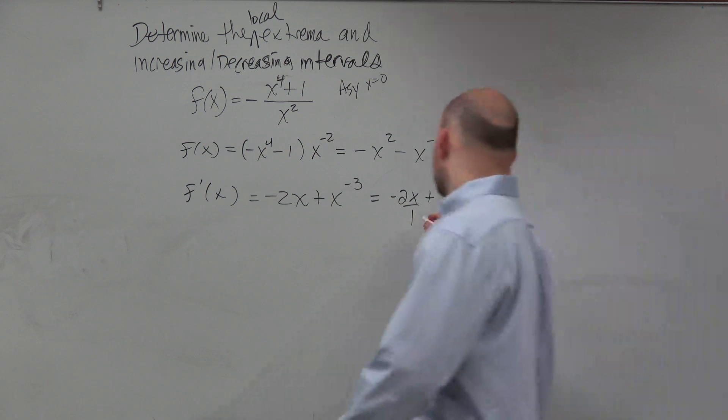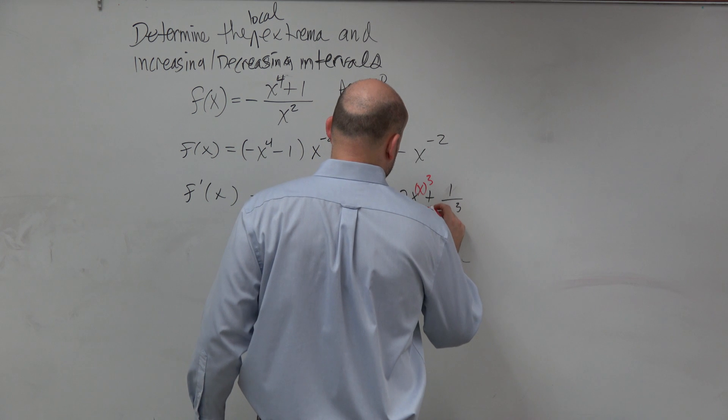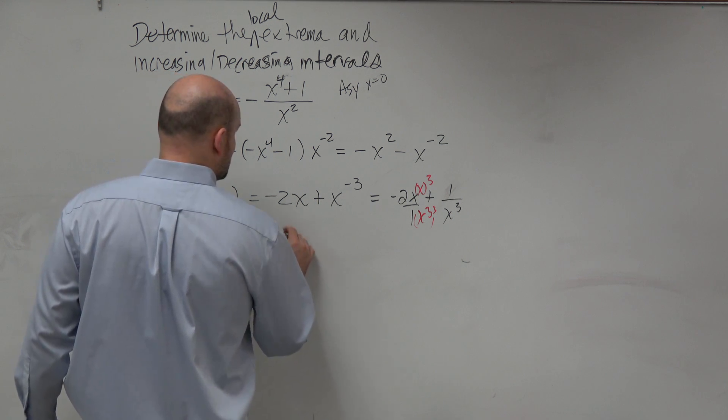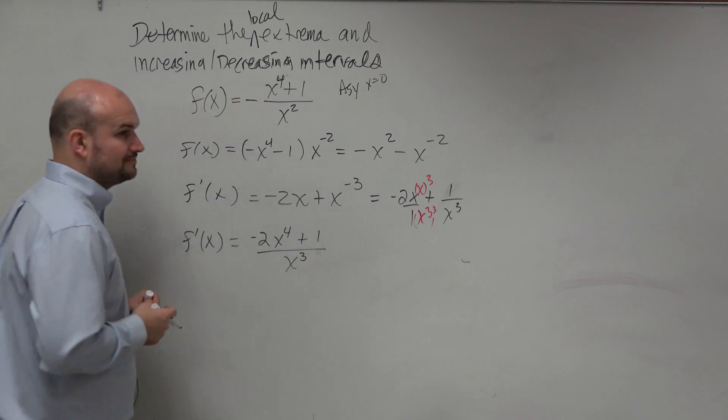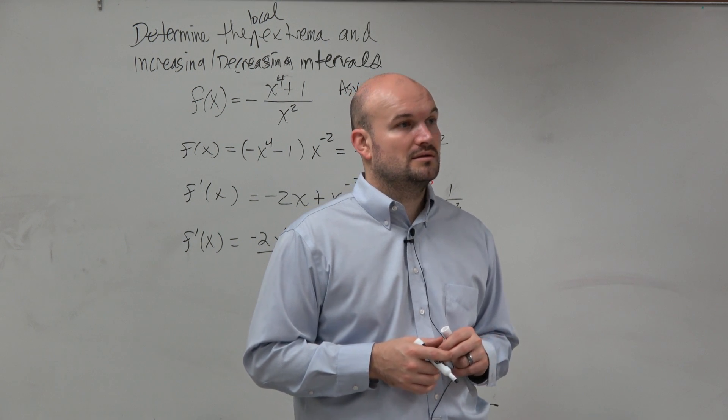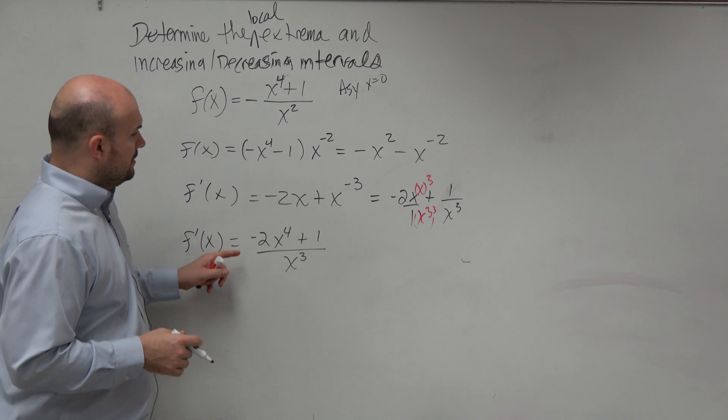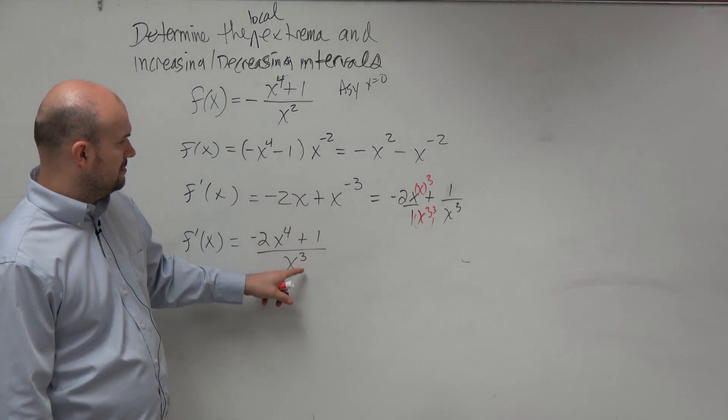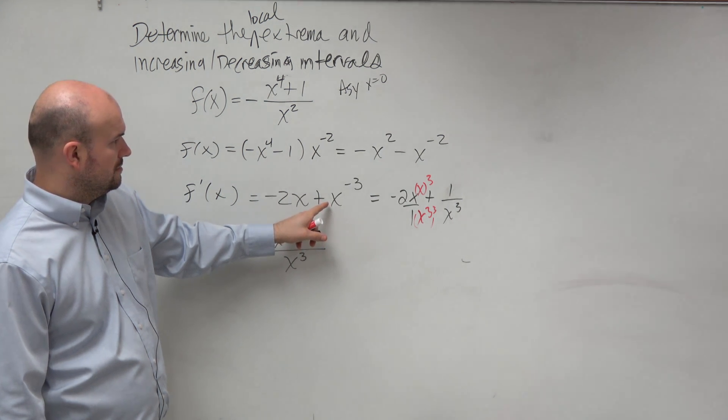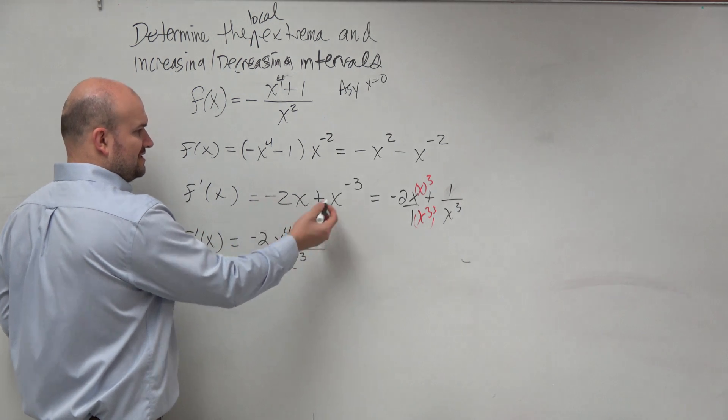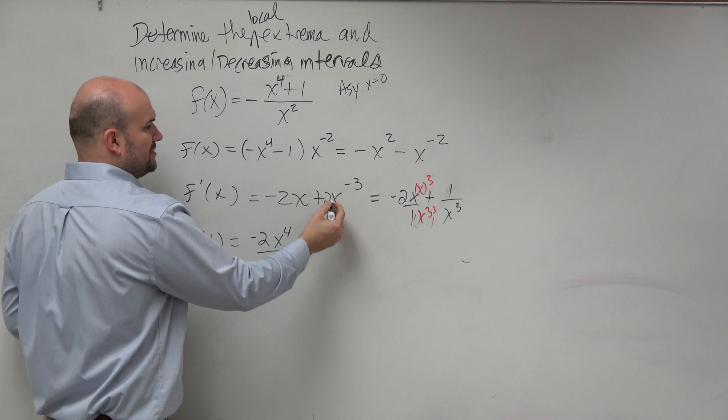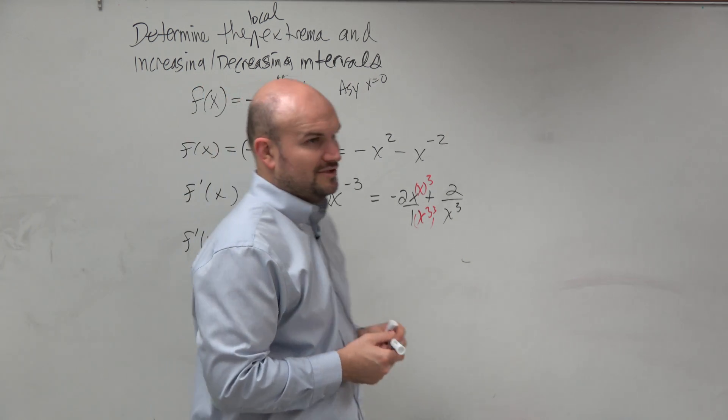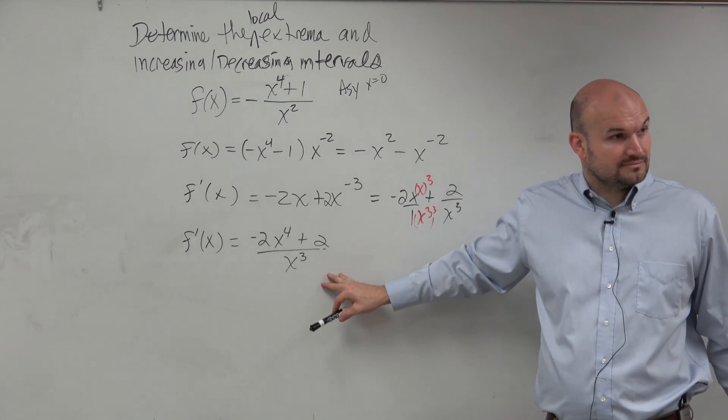I'll multiply by x cubed on both. And now I can say f prime of x is equal to negative 2x to the fourth plus 1 over x cubed. Oh, I forgot to take the 2, right? I forgot to bring down the 2, which is a positive 2. Thank you. So that would have been a 2 over here. Power rule mistake. So it doesn't really matter. I guess if you change, you can still make mistakes.